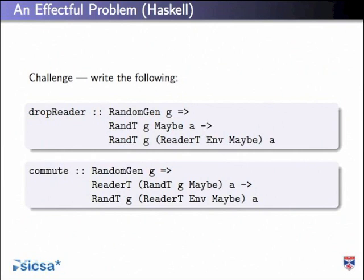Here's a challenge: given something in rand T of reader T of maybe, what happens if we have another function we want to call that is in rand T of maybe? That's clearly something we should be allowed to do because we're using a subset of the effects. But writing this function is actually quite hard. Another thing: you might have the same collection of effects but in a different order. Writing a function that commutes the effects is quite hard. Challenge: write the following. Please don't. There are better ways of doing this.